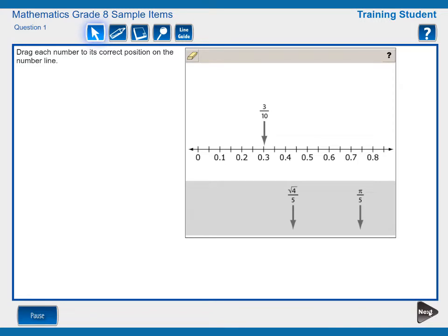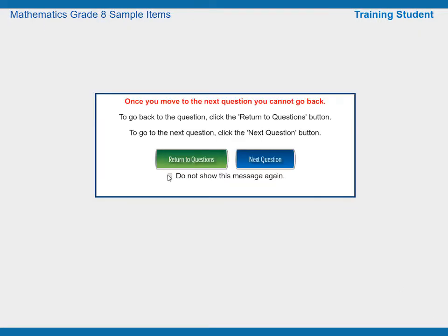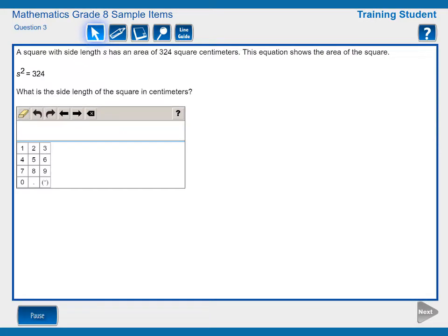If a student does not answer the item or responds and then uses the eraser tool to erase the response, the Next button will be light gray, signaling that it is not active and the student will be unable to advance to the next item until a response is given.